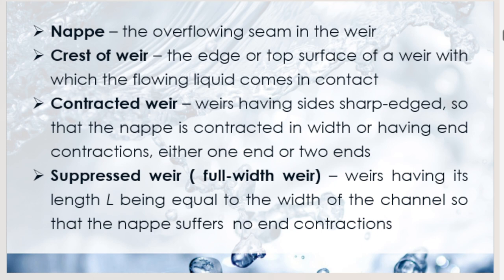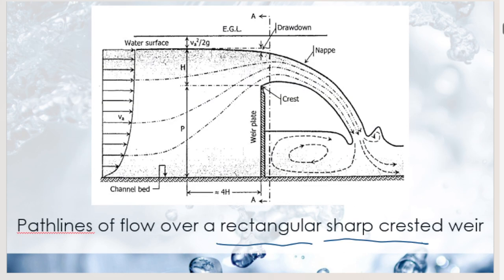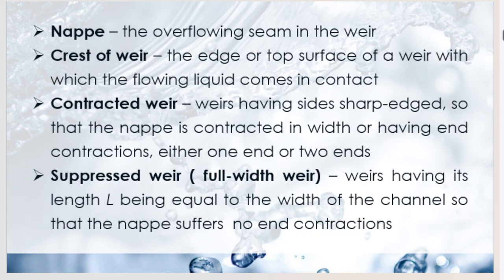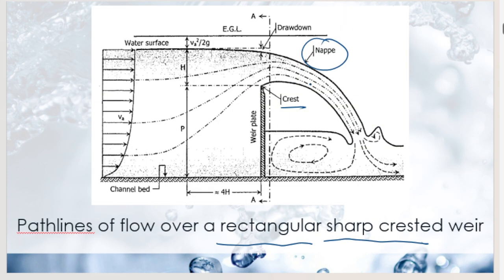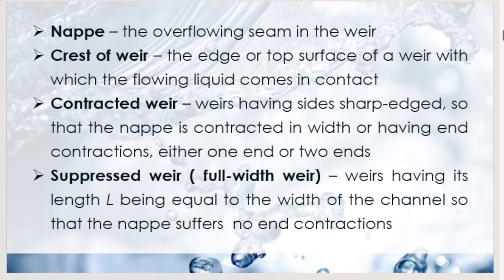For weir factors, we have the Francis formula, where C-sub-w = 1.84 × [1 + 0.26(H/D)²] for SI units. This is based on experiments with rectangular weirs from 1.0 m to 5.18 m long, under heads from 180 mm to 490 mm. When H/P < 0.4, the formula reduces to C-sub-w = 1.84 (SI) or 3.33 (English).